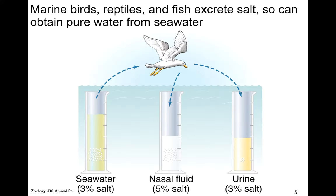Interestingly, many marine birds, marine reptiles, turtles, marine iguanas, sea snakes, and fish can drink seawater and manage to obtain pure water from it. They have much less highly efficient kidneys than mammals — so how do they do it? They tend to have salt glands. In birds these tend to be in the head.